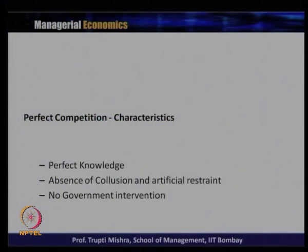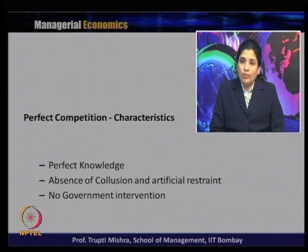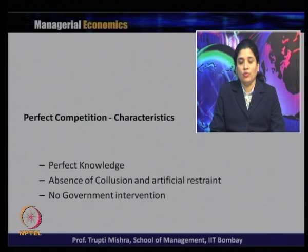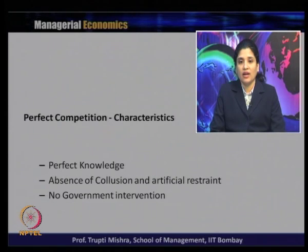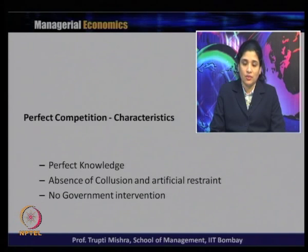The fifth characteristic is perfect knowledge — all buyers and sellers have full information about the product, the price, and the sellers from whom they are buying. From the seller's point of view also, they have full information about the price and the product. Both sellers and buyers have information about the overall market condition, each other's perspectives, and what the market is doing.